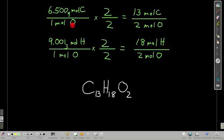6.5 moles of carbon per 1 mole of oxygen times 2 over 2 gives us 13 moles of carbon per 2 moles of oxygen. And down here we get 18 moles of hydrogen per 2 moles of oxygen. And so now we know our empirical formula is C13H18O2. Here we go.